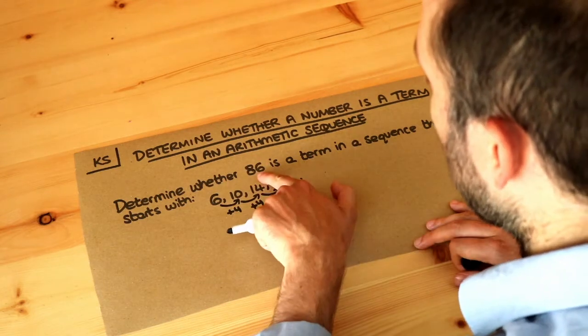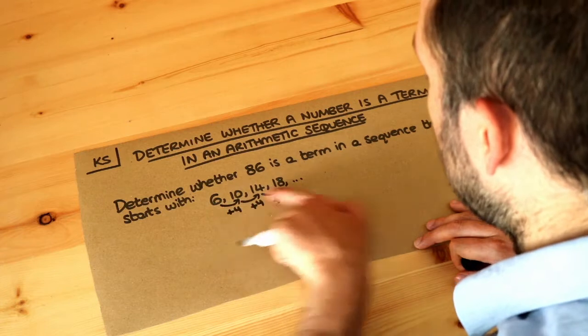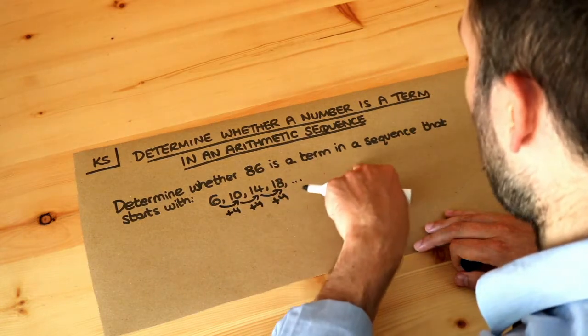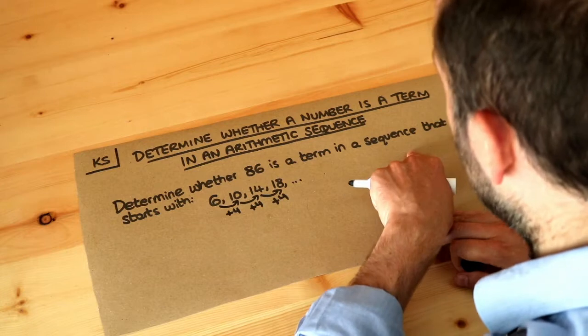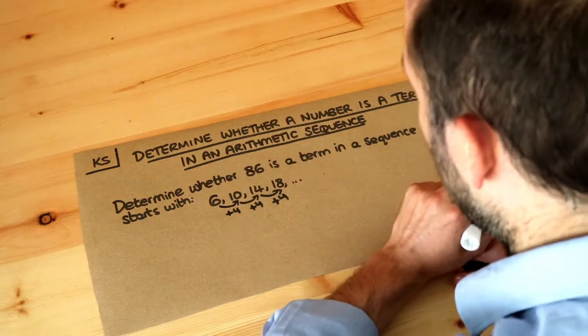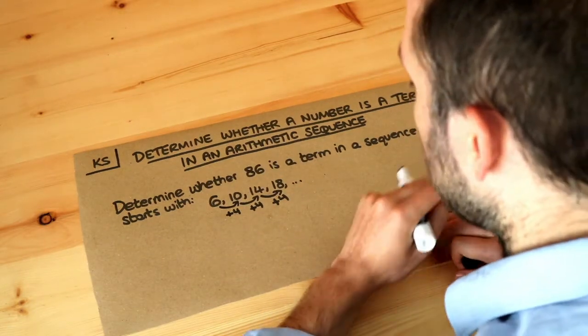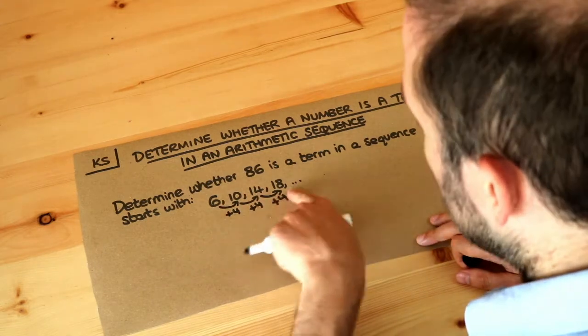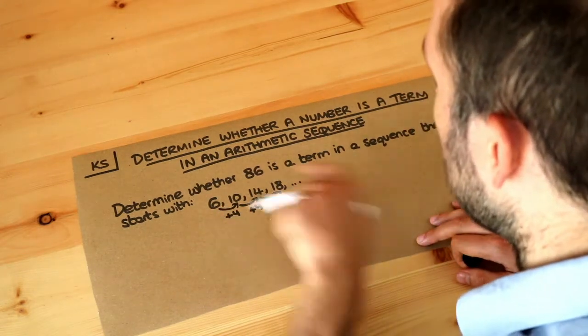Now to work out whether 86 is in this sequence we could just keep on adding four until we eventually see whether we hit the 86 or whether we go past it, but there's a better way of doing it and that is to find the nth term formula of this sequence first.